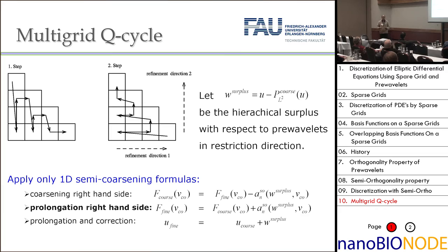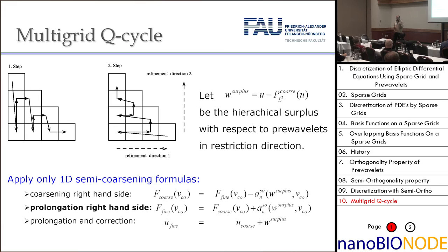The multigrid algorithm we use is the so-called Q-cycle — a semi-coarsening cycle. The scheme shows a grid very fine in the y-direction, then in the x-direction, doing semi-coarsening with V-cycles in both directions. The formulas for restriction and prolongation can be derived completely from the 1D case — you never need to account for overlapping. Pre-wavelets are used only in the direction where you restrict; relaxation can be done with standard basis functions and then switched to pre-wavelets when coarsening.